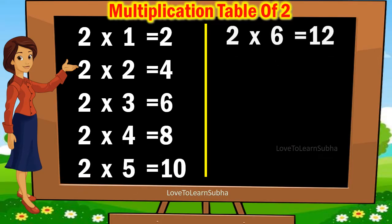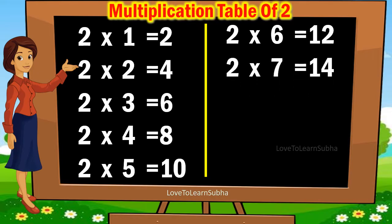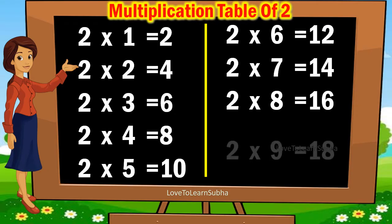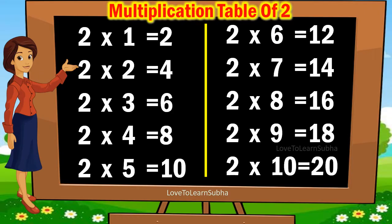2 sixes are 12, 2 sevens are 14, 2 eights are 16, 2 nines are 18, 2 tens are 20.